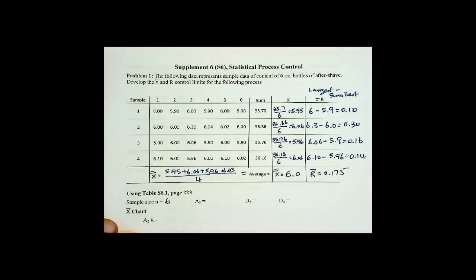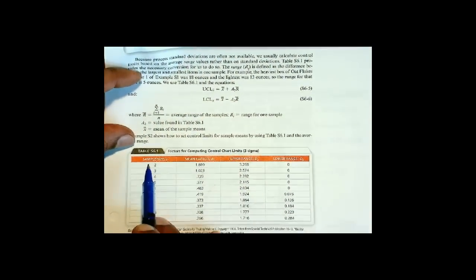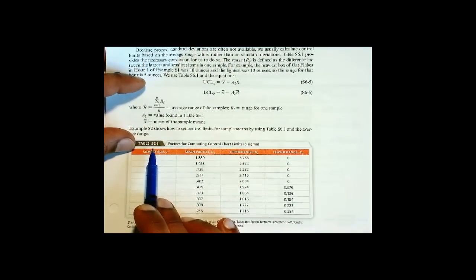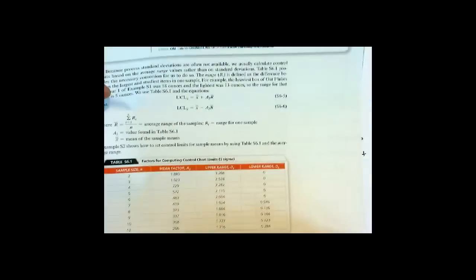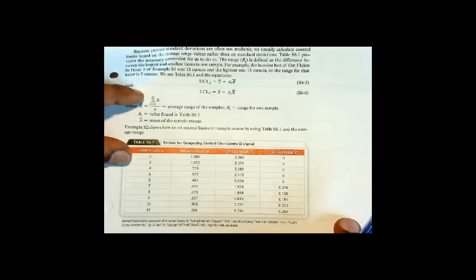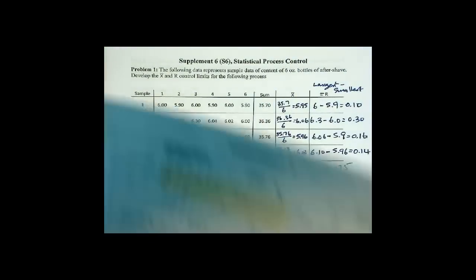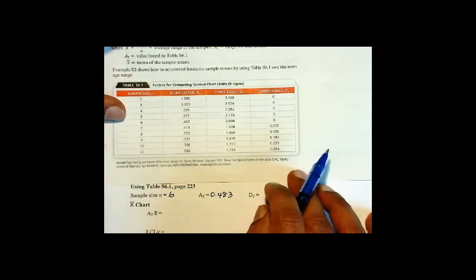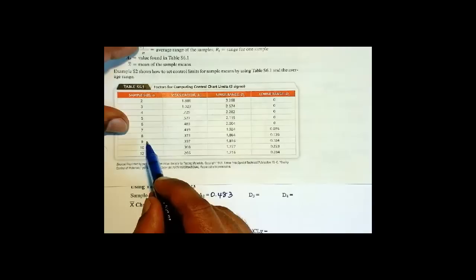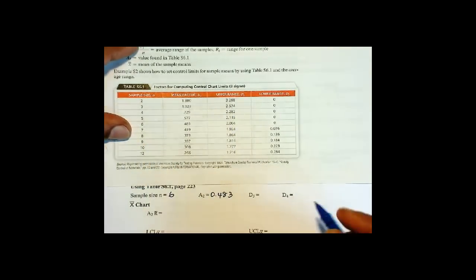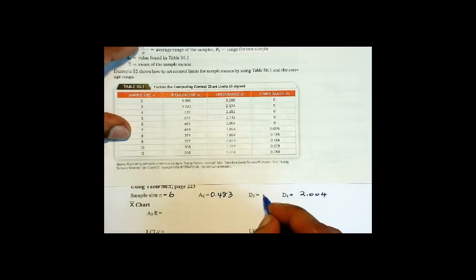Now if you go with this sample size, let's go to table 6.1. This is on page 241. So for 6, A sub 2 is 0.483. Then for 6, D sub 4 is 2.004, and D sub 3 is 0.